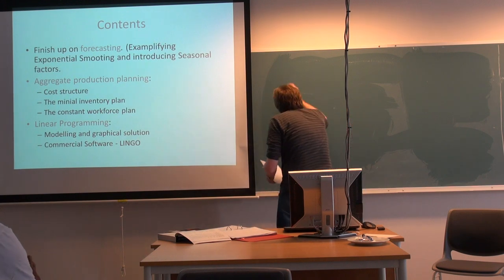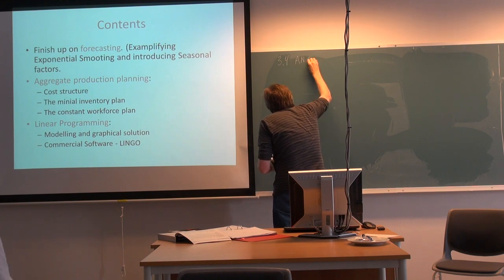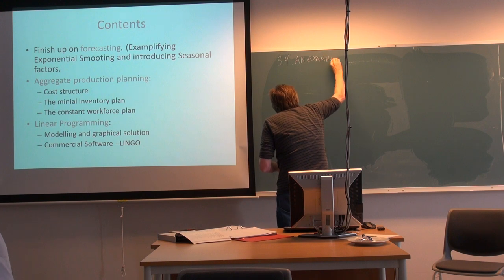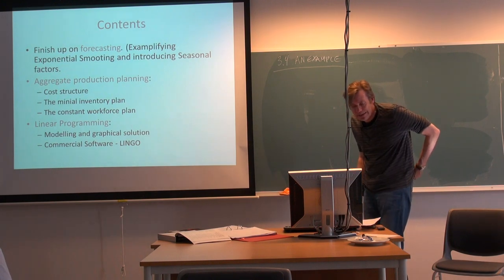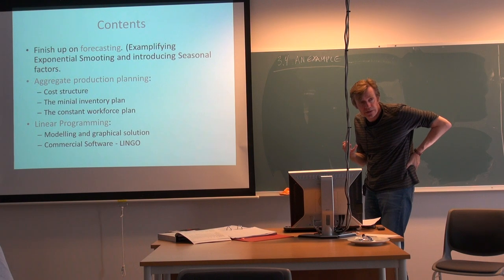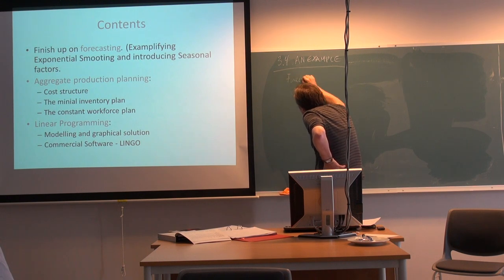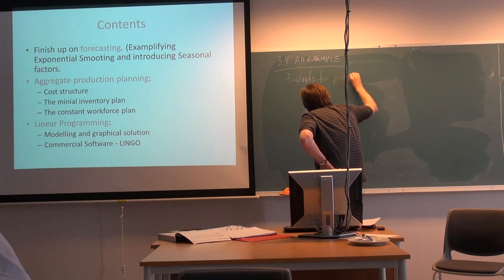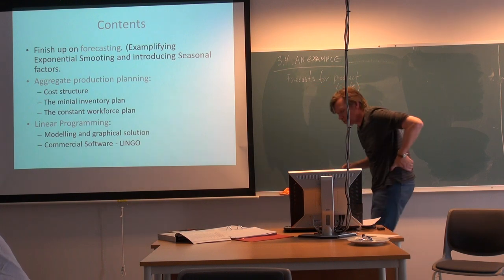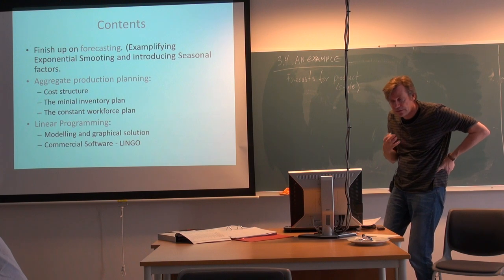Let's look at an example now — paragraph 3-4 in the textbook. In order to look at the production or aggregate production planning example, we need a set of demand forecasts as input. We assume a single product here. In most cases, manufacturers produce more than one, which adds difficulties we will not look at here.